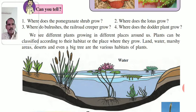Land, water, marsh areas, desert, and even a big tree are the various habitats of the plants.